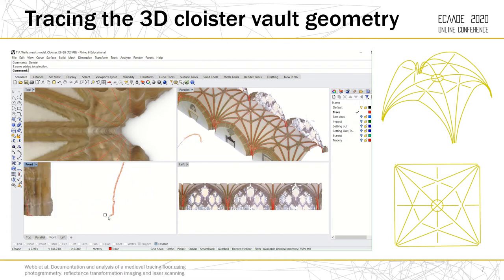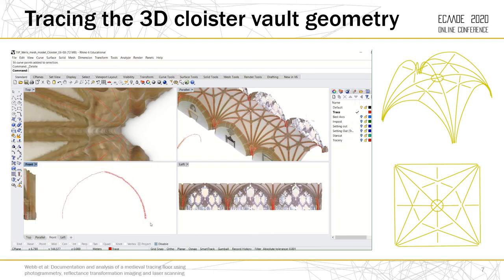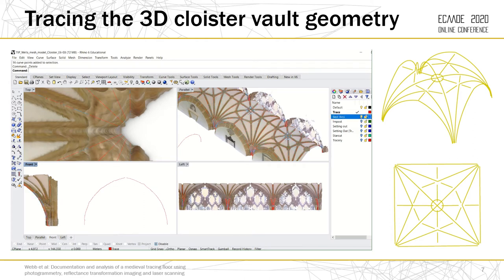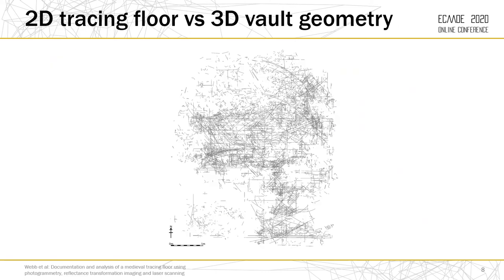The result of the tracing is visible to the right of the slide. You can see here a 2D plan of the built vault as well as a 3D wireframe version. The final stage of the project was to compare the 2D tracing of the floor with the 3D geometry of the vault itself.